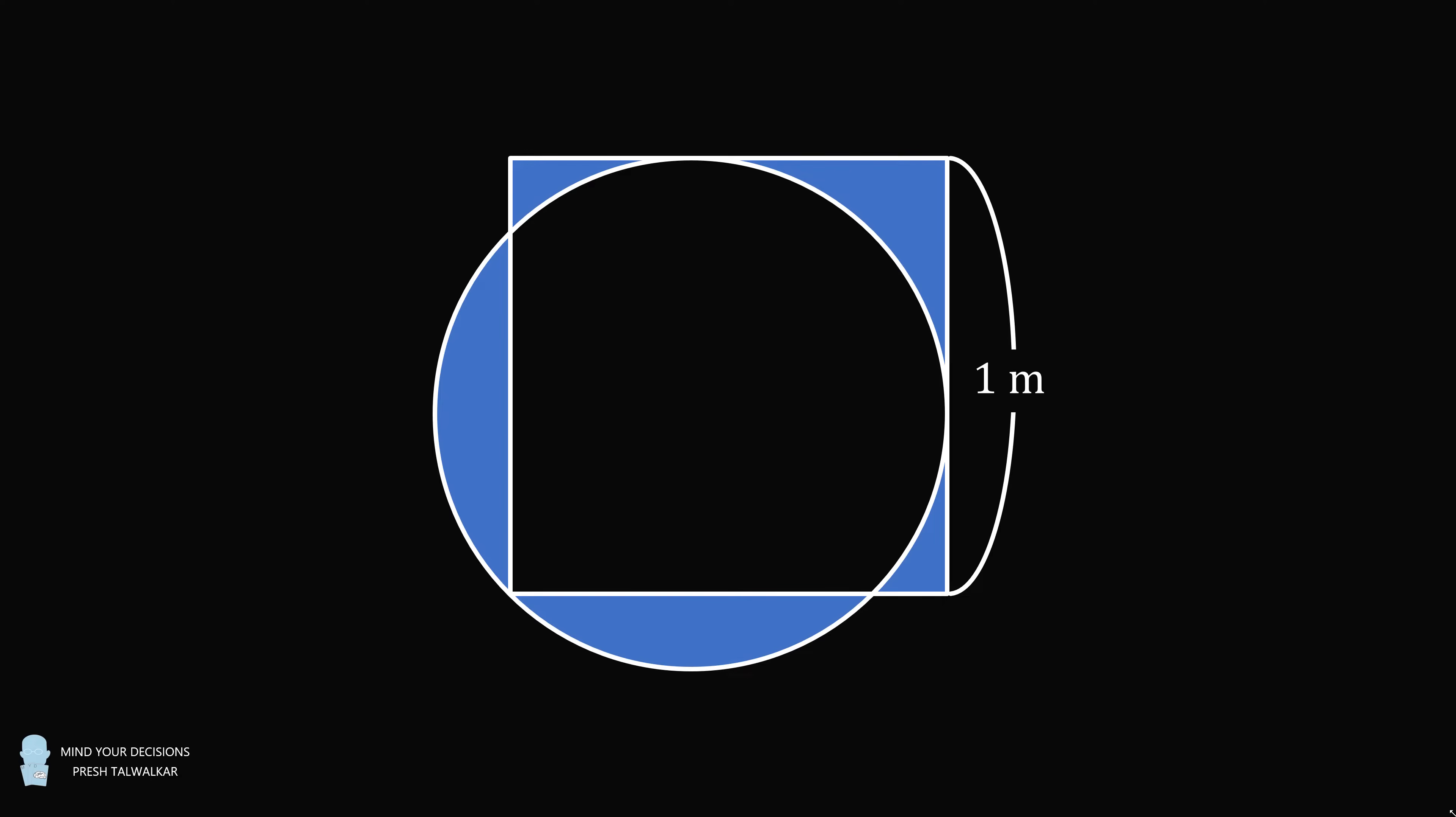Shade in the following regions. These are the regions that are contained by the circle and the square, but not common to both shapes. The question is what is the total area that is shaded in blue?